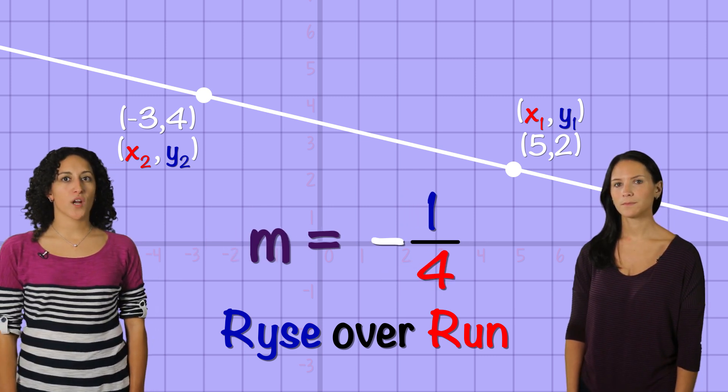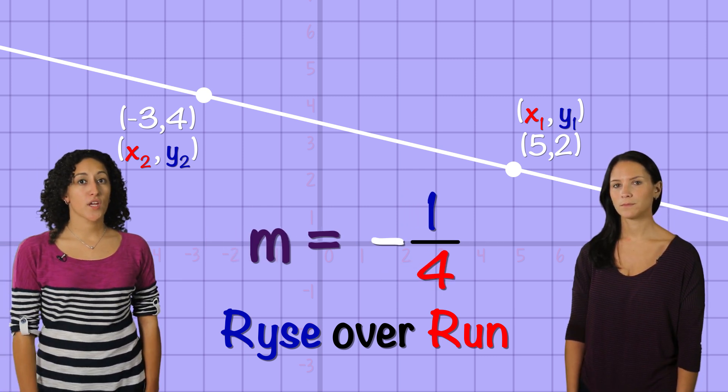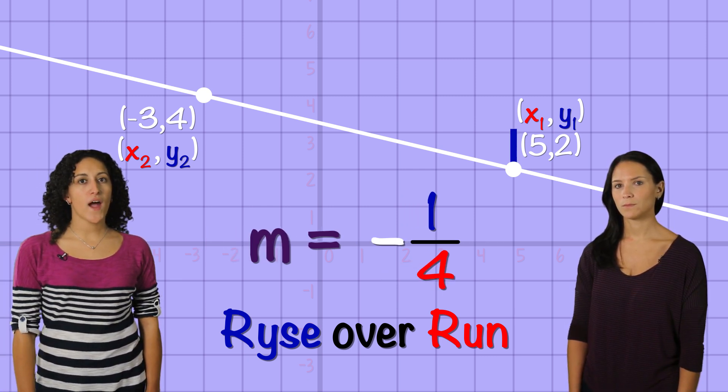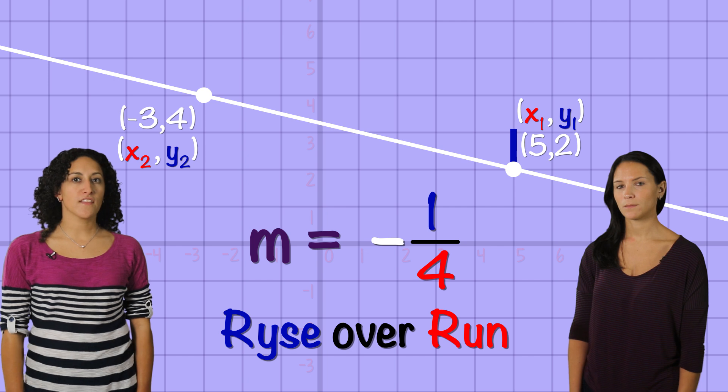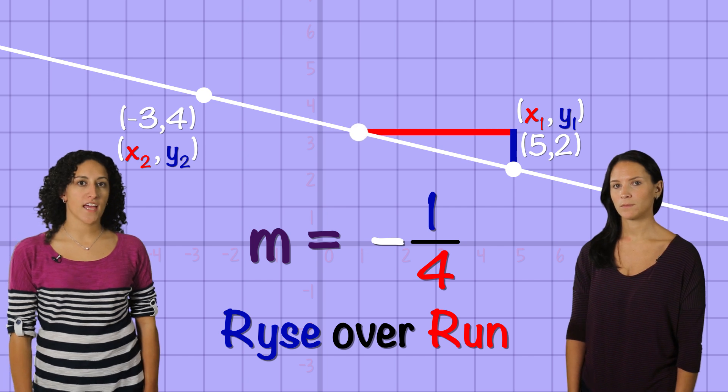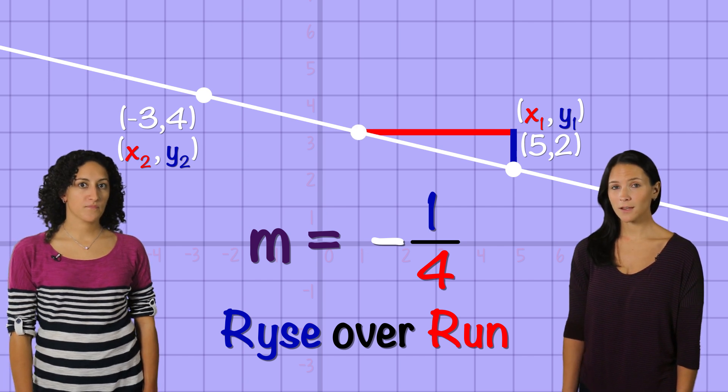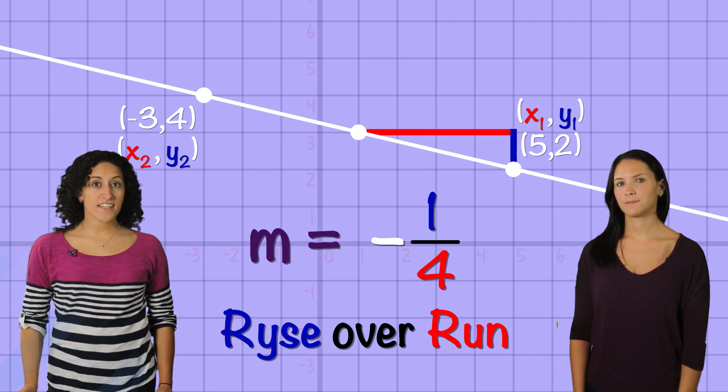To check, let's begin at one of our points. We go up 1 on the y-axis, then left 4 on the x-axis. It falls on the line. And that's it.